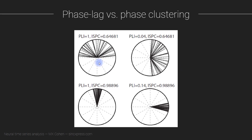Let me start with a very simple simulation. I've generated two distributions of phase angles and then rotated them. These two distributions are exactly the same, just with a rotation of pi over two — a 90-degree rotation. Because ISPC, inter-site phase clustering, measures the overall clustering, the ISPC is high for these two cases, very close to one.